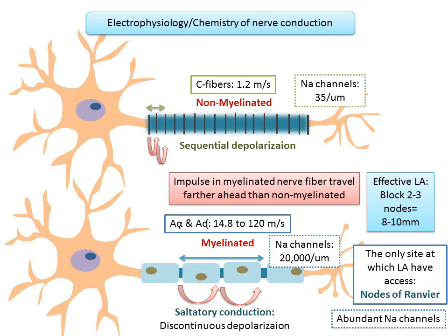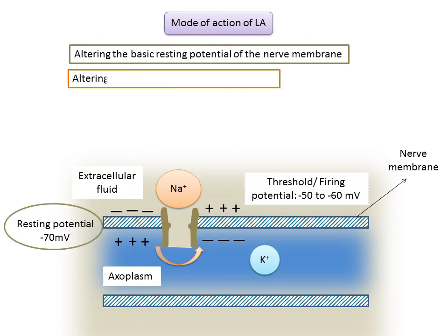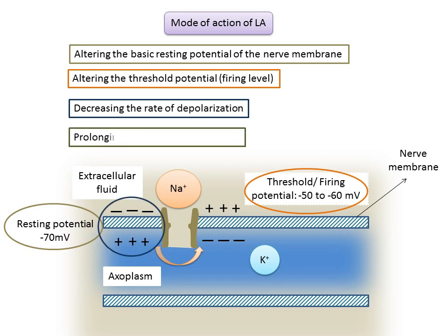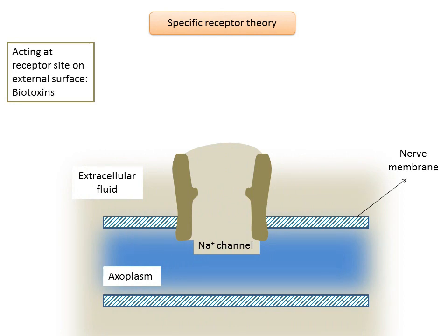How and where do local anesthetics alter the processes of impulse generation and transmission? Local anesthetics can interfere with the excitation process in a nerve membrane in one or more of the following ways: altering the basic resting potential of the nerve membrane; altering the threshold potential (the firing level); decreasing the rate of depolarization; and prolonging the rate of repolarization. The specific receptor theory is considered the most favorable theory today, explaining the mechanism of action of local anesthetics.